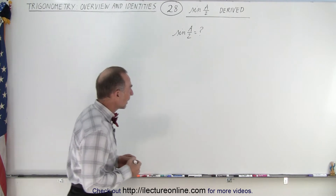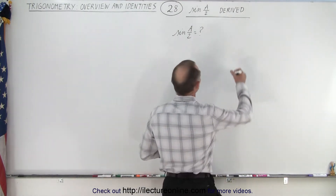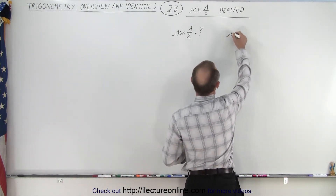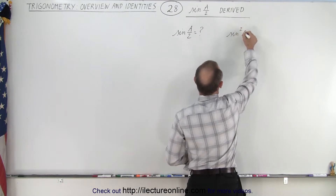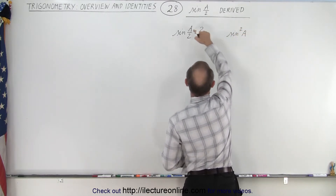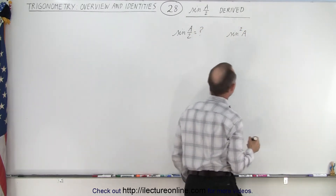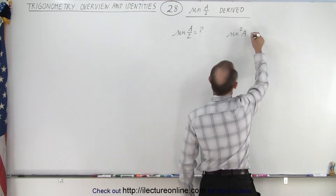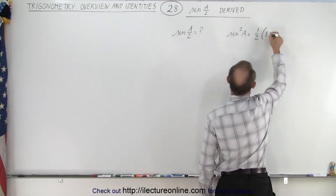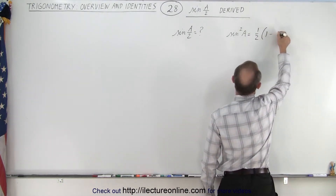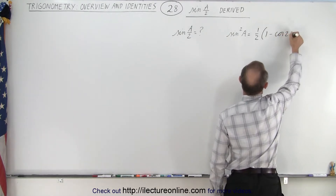Well, we start with another identity, which is that the sine squared of angle A — here it is the same angle, but there it's in half — is equal to one half times one minus the cosine of 2A.